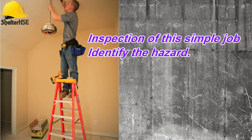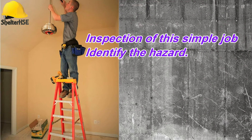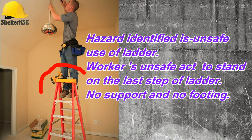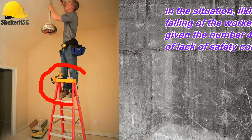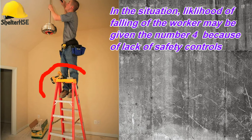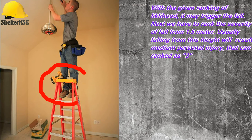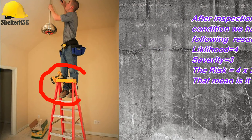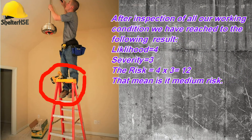Inspect the area or location and see what job is going to be done. At each stage and task of the job, we focus on the hazards, the likelihood or chance of the accident happening, and give a grade to likelihood from 1 to 5 — from low to high chance of an incident occurring. At the same time, we consider the severity of the outcome and grade severity from 1 to 5, from minor to major injury or fatality.